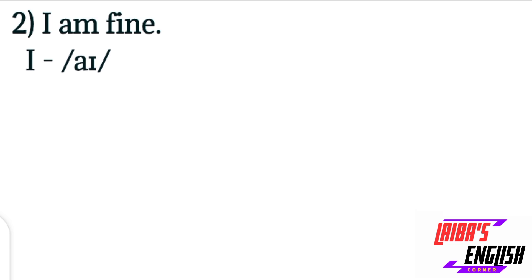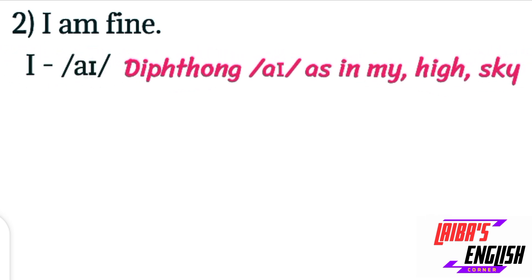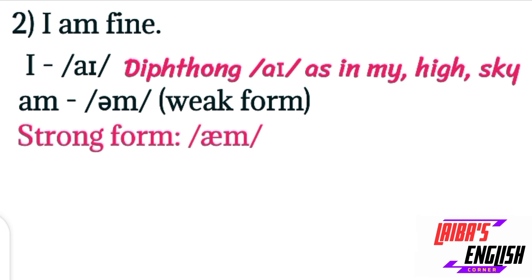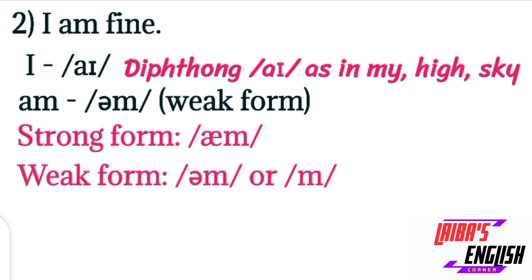The first word is 'I.' If you have watched my other videos before, it will be easy for you to recognize which diphthong sound is used here. 'I' will be represented by this symbol — it is the sound used in 'my,' 'high,' 'sky.' Then 'am.' 'Am' is also a weak form because whenever we speak this sentence fluidly we say 'I'm fine,' so a schwa sound and M sound will be there. This is the weak form.